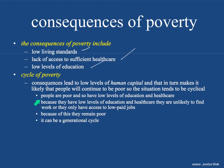The situation tends to be cyclical and it goes like this: people are poor and have low levels of education and health care; as a result, they are unlikely to find work or they only have access to low-paid jobs; because of the low-paid jobs, they remain poor. It can be a generational cycle. It has to do with your opportunities early in life, first and foremost as a result of the generational cycle you were born into.